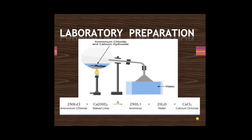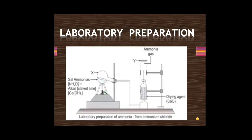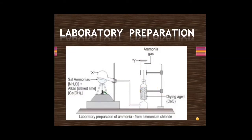If we need to prepare ammonia gas in a dry state, we need to pass it through a drying agent. It passes through a tower of calcium oxide, also called quick lime. Calcium oxide will absorb any moisture present in ammonia, and dry ammonia gas will then be collected into the test tube.